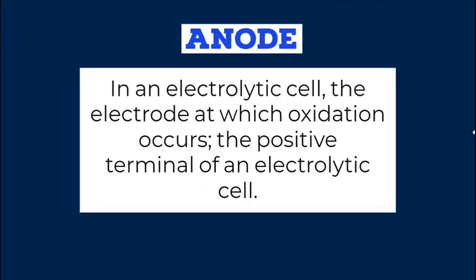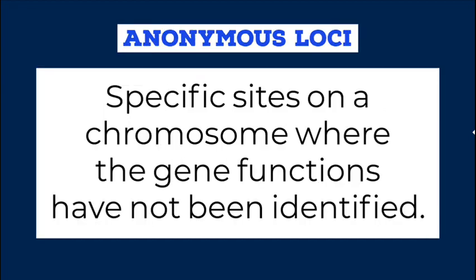Anode: In an electrolytic cell, the electrode at which oxidation occurs; the positive terminal of an electrolytic cell. Anonymous loci: Specific sites on a chromosome where the gene functions have not been identified.